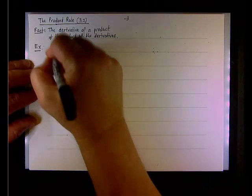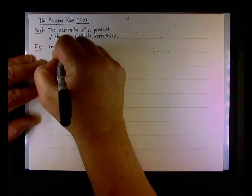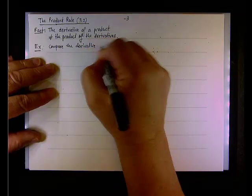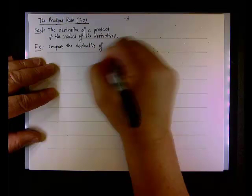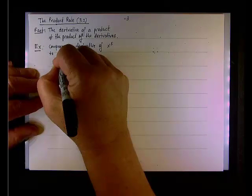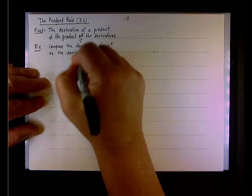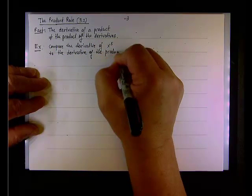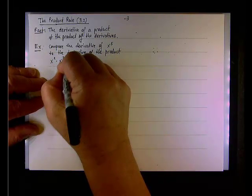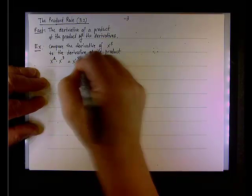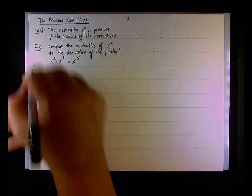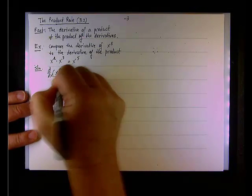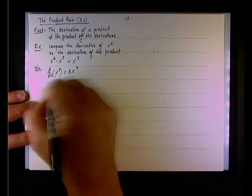To give you an example, compare the derivative of x to the fifth to the derivative of the product x squared times x cubed equals x to the fifth. So, we can see right away that if we work this out, d/dx of x to the fifth, I'll use Leibniz notation, by the power rule is 5x to the fourth.